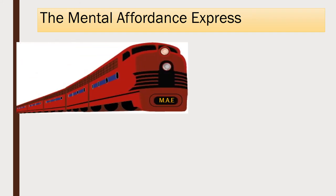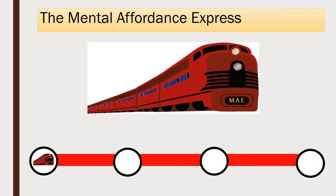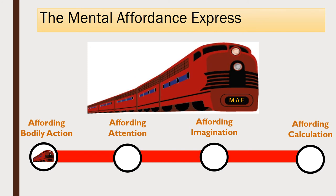My strategy in the paper is to assume everyone's on board with the idea of bodily affordances and then to take you one station at a time further away from the bodily and into the realm of the mental. The first case I look at is affording attention — attention is a mental act but it has very intimate links to the bodily. Going further into the mental, I then make a case for things in our environment affording certain imaginative acts — specifically imagined bodily acts, so there's still a close link to the bodily. Third and finally, I look at affording calculation, a mental act that has very little to do with the bodily. If there are affordances to count things or perform other mathematical calculations, then we have a mental affordance which has very little to do with the bodily at all.